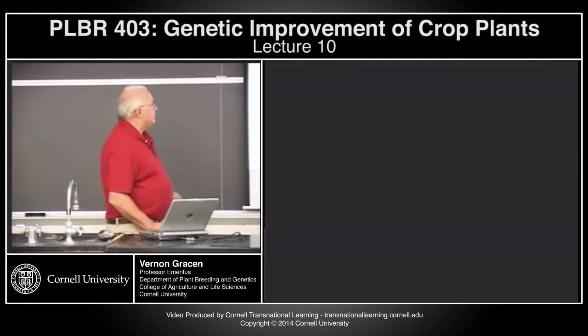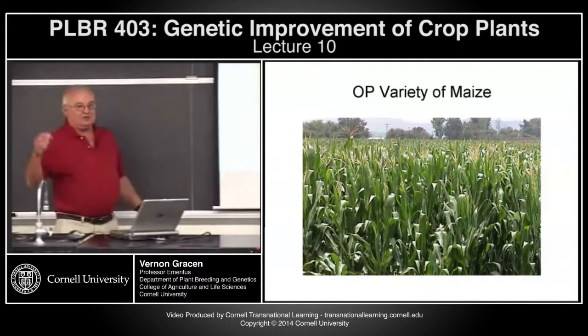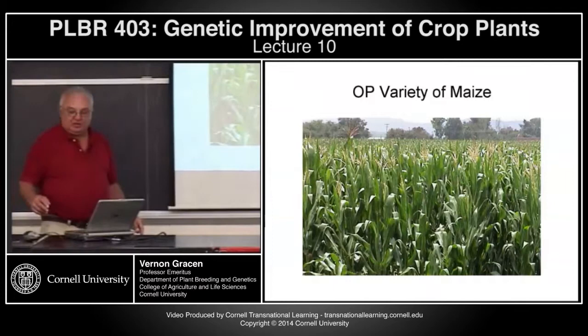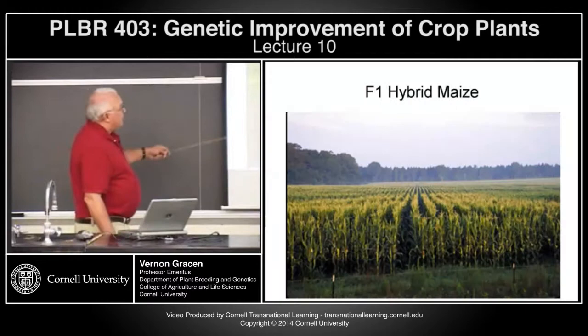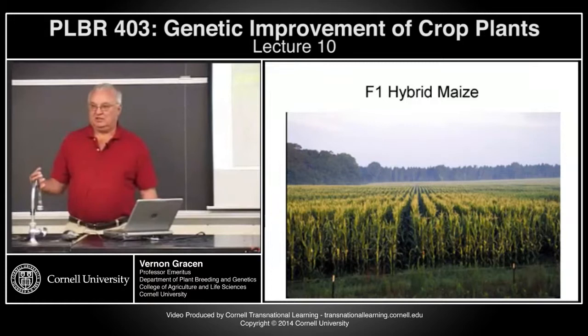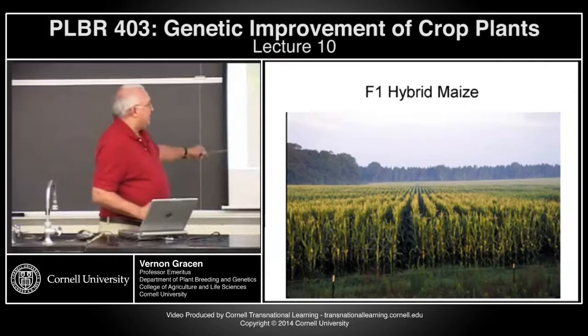We'll start talking about how to do that today. This is an open-pollinated variety of maize — plants at different maturities, as you can tell from whether the tassels are out or not. So a heterogeneous mixture of heterozygous plants. This is an F1 hybrid of maize — the same degree of heterozygosity, but very, very homogeneous.